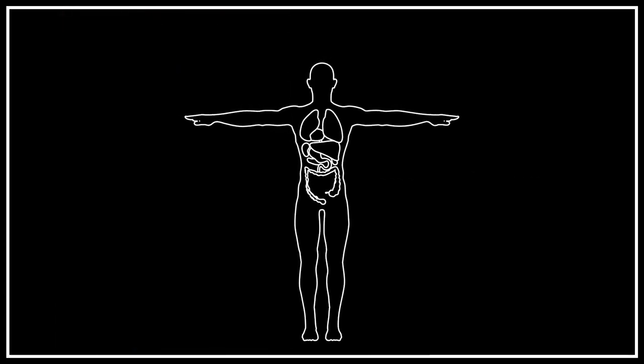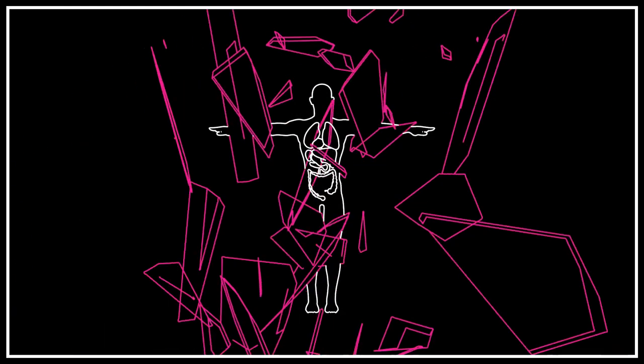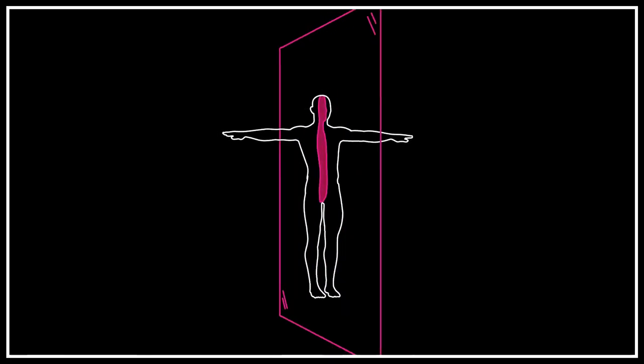One explanation for the prevalence of bilateral symmetry is that most animals encounter no consistent preference for left or right in their environment. An exterior form with mirror symmetry is therefore optimal.